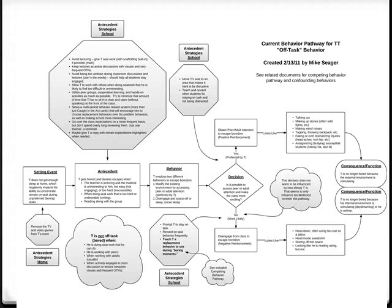This is the behavior pathway I created for him. You can see the setting events, antecedent behavior, and then a decision pathway. Basically, Thomas would get bored and either check out or strive for peer attention if that was available — he preferred that. Either way, the true function of his behavior was to obtain sensory input to alleviate his boredom. The stop signs shown are all antecedent strategies at different points that I suggested.